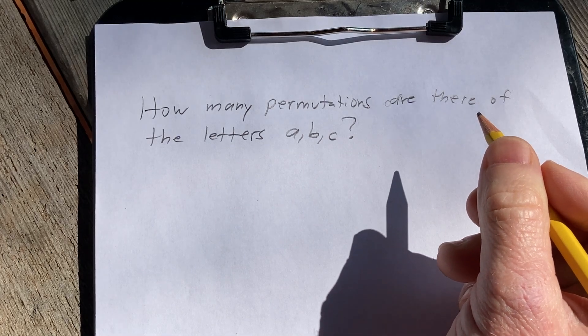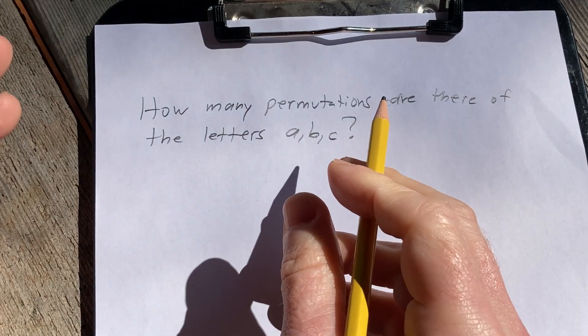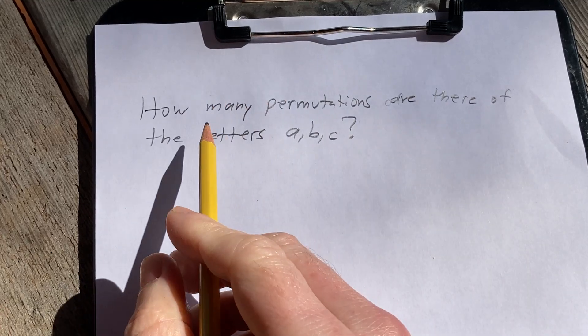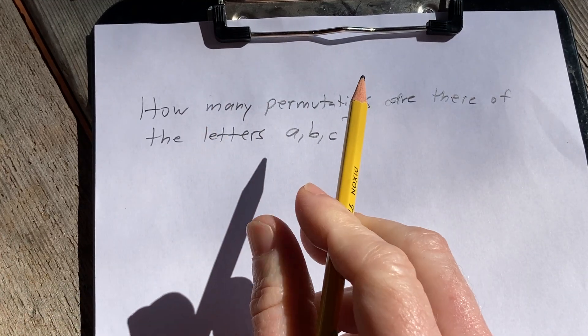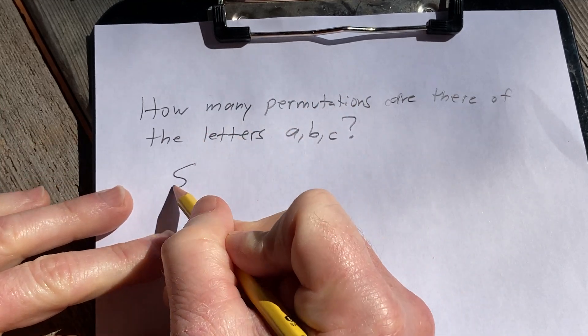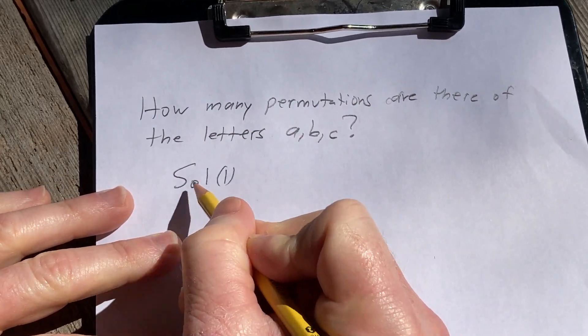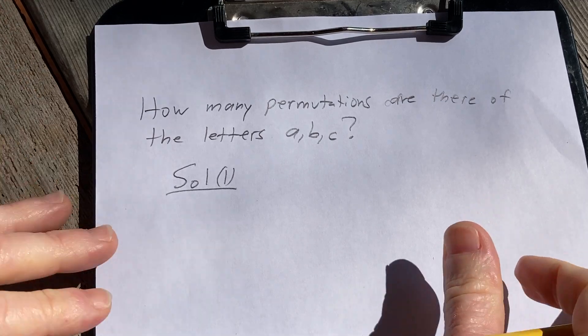Hi, in this video we're going to do a counting question, and we're going to answer it two ways. The question is, how many permutations are there of the letters A, B, C? Let's go ahead and do it the first way, which is the fast way, and then I'm going to show you a longer way to do it, which is also really instructive.